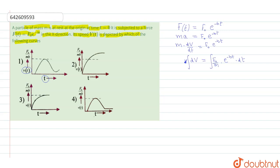This integration is over time from 0 to some time t. It will be the integration for dt, so from 0 to t will be the integration limits.